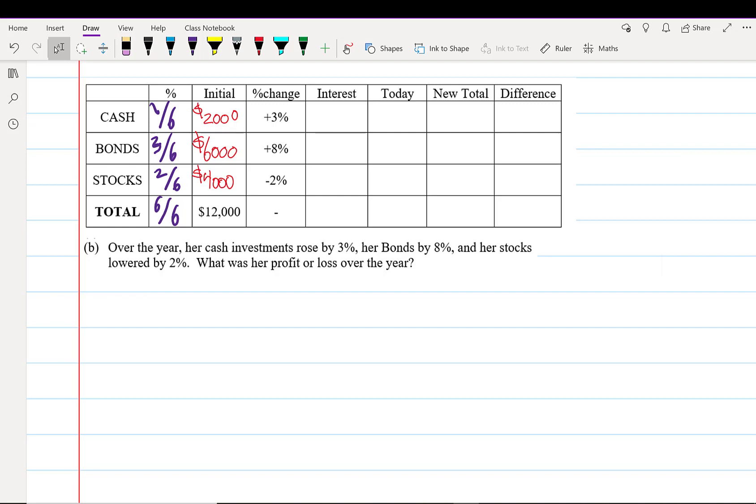For part B, we're going to look at percent change. Percent change is always done by the old value times (1 plus the change) equals the new value. So for cash, we end up with $2,000 × 1.03 = $2,060.